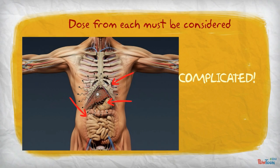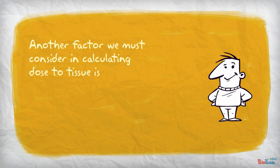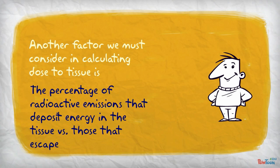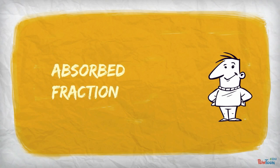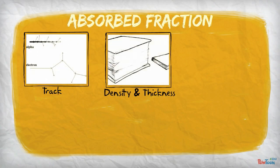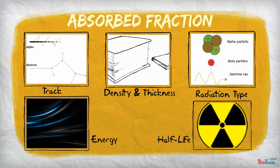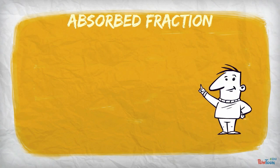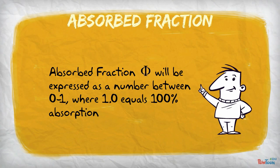Another factor we must consider in calculating dose to tissue is the percentage of radioactive emissions that deposit energy in the tissue, versus those that escape the tissue. This value is called the absorbed fraction. Many factors that we have already discussed affect the absorbed fraction, such as track, density and thickness, radiation type, radiation energy, and half-life of the nuclide. Absorbed fraction will be expressed as a number between 0 and 1, where 1.0 equals 100% absorption.